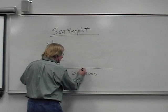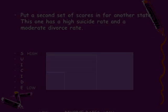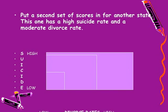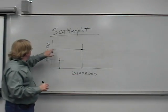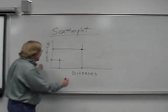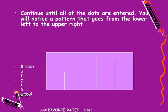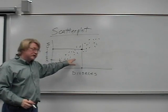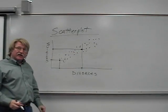Let's say we find a state that has a moderate divorce rate and a moderate suicide rate. We draw our lines where the two crisscross, and that dot represents that state's measure on the variables of divorce rate and suicide. We do that for all 50 states, and you'll see the actual scatterplot in just a minute.